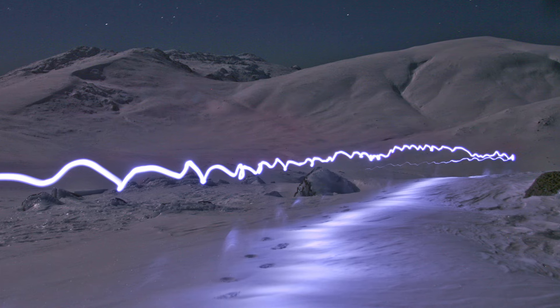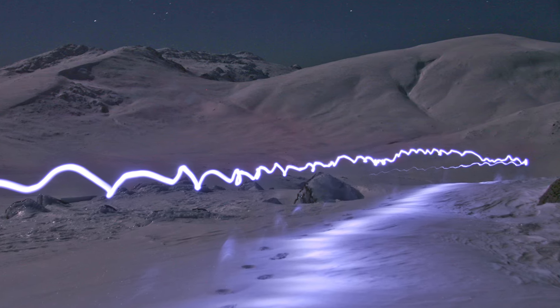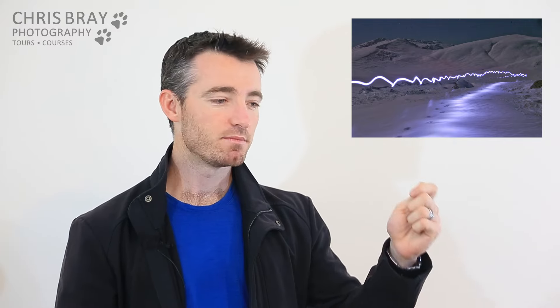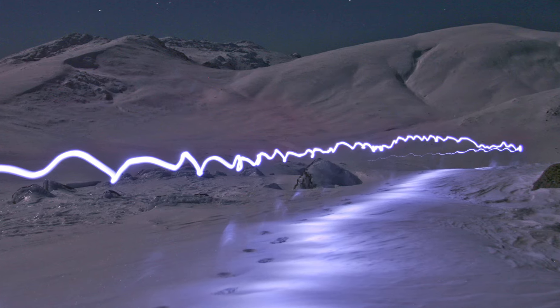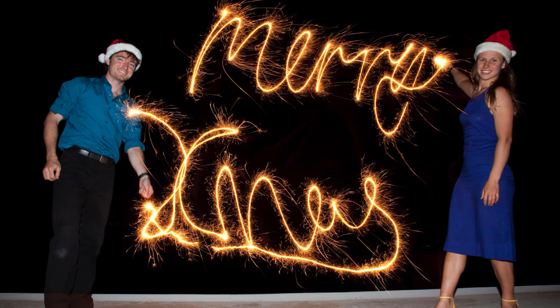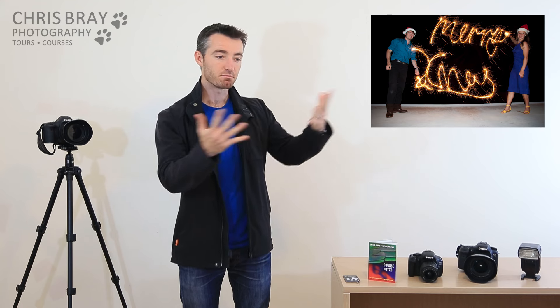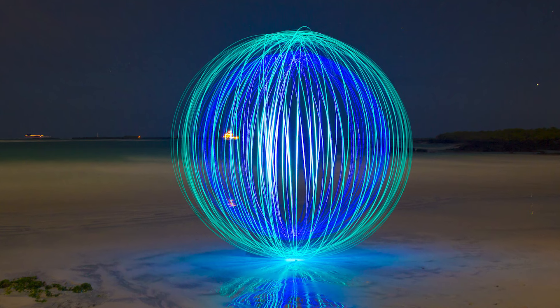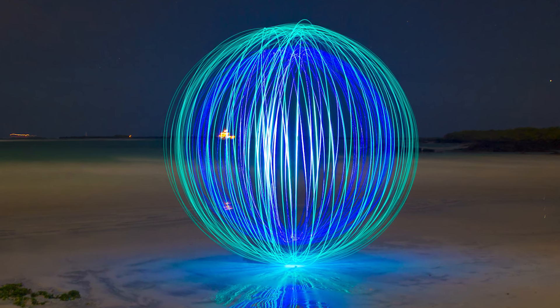Longer, slower shutter speeds give you time to be creative with light. Here's a photo of someone walking through snow carrying a torch - you can't really see the person because they've smeared themselves across the image, but the torch left a mark wherever it went. This was our Christmas card photo - just a 10-second photo with a flash at the end. The sparklers write 'Merry Xmas', then we stand to the side and the flash fills us in.